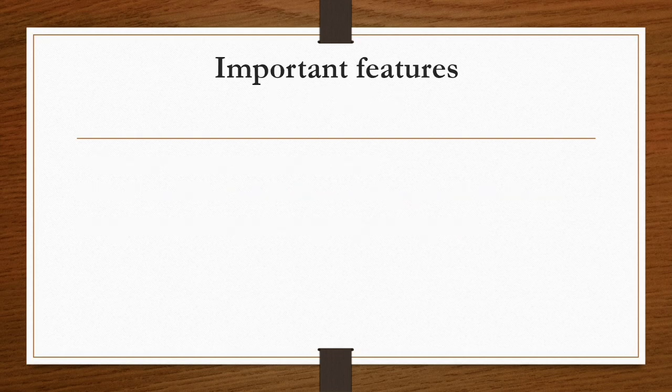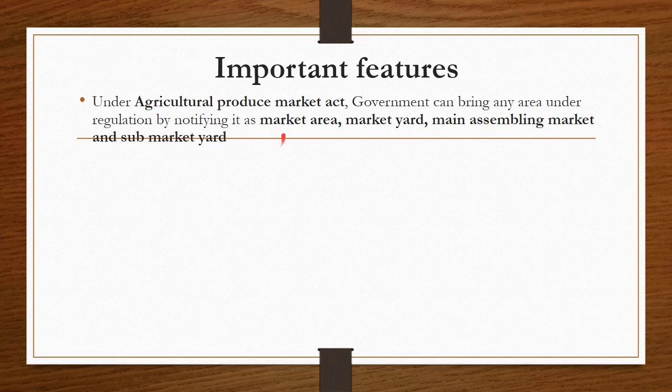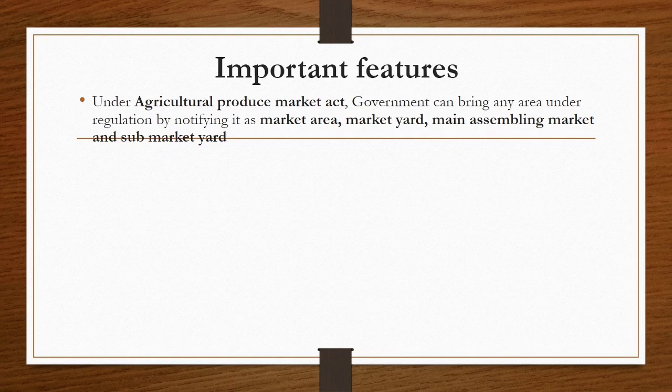The important features of these regulated markets are: under the Agricultural Produce Market Act, the government can notify any area as a market area, market yard, main assembling point, or sub-market yard. These are notified and taken under regulation by the government to ensure proper movement of produce from producer to consumer.